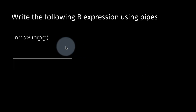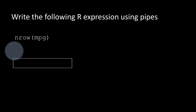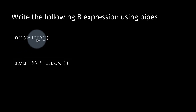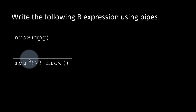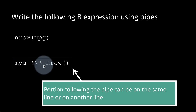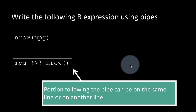For example, suppose you want to do nrow(mpg). Ideally you'd write it directly; you don't really need pipes for this single operation. But if you were to use pipes, you'd write mpg %>% nrow(), because nrow is the function and mpg is the object. I would much rather write it the direct way for a single operation. When writing pipes, the portion following the pipe can be on the same line, but I prefer to write it on the following line, since pipes are often 3, 4, or 5 deep.